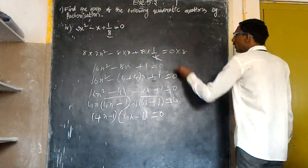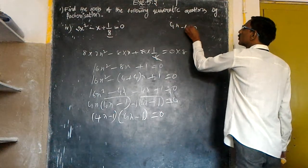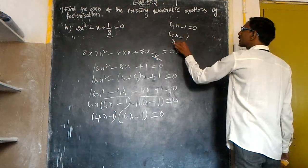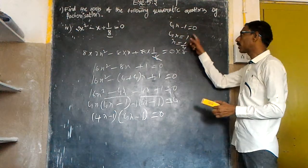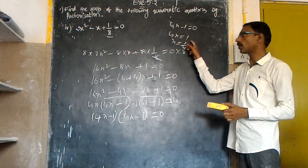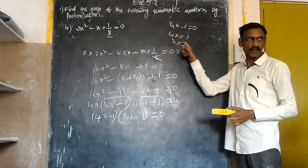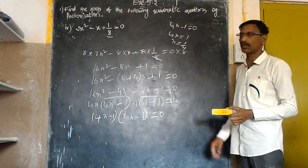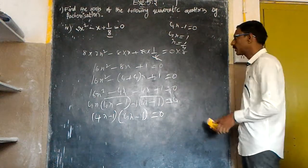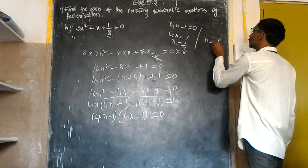Therefore, we get 4x minus 1 is equal to 0, 4x is equal to 1, x is equal to 1/4. Minus 1 plus 1, 4 is multiplying, if it goes to the other side it divides the 1, we get x is equal to 1. In the same way we are getting x is equal to 1/4.